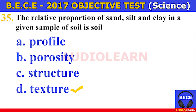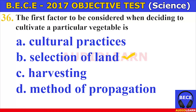Number thirty-five. The relative proportion of sand, silt, and clay in a given sample of soil is soil A. profile, B. porosity, C. structure, D. texture. The answer is D. Texture. The relative proportion of sand, silt, and clay in a given sample of soil is soil texture.